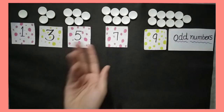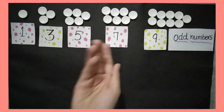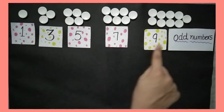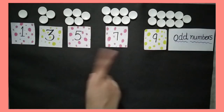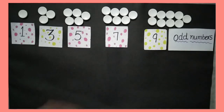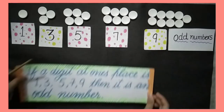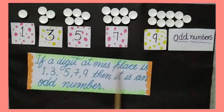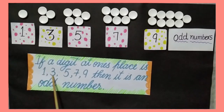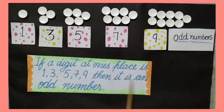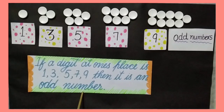We have also learned that the numbers 1, 3, 5, 7 and 9 do not make pairs, so they are odd numbers. From the examples we have taken, we can conclude that if the digit at the ones place is 1, 3, 5, 7, or 9, then it is an odd number.